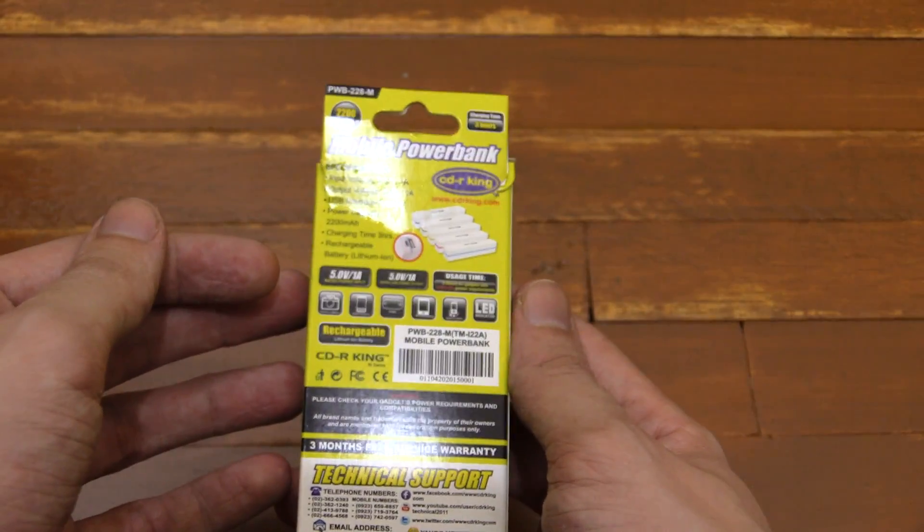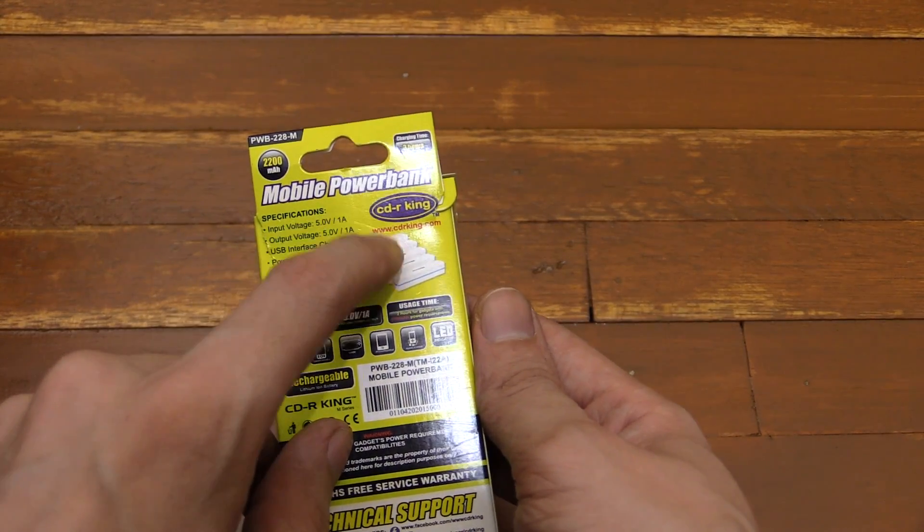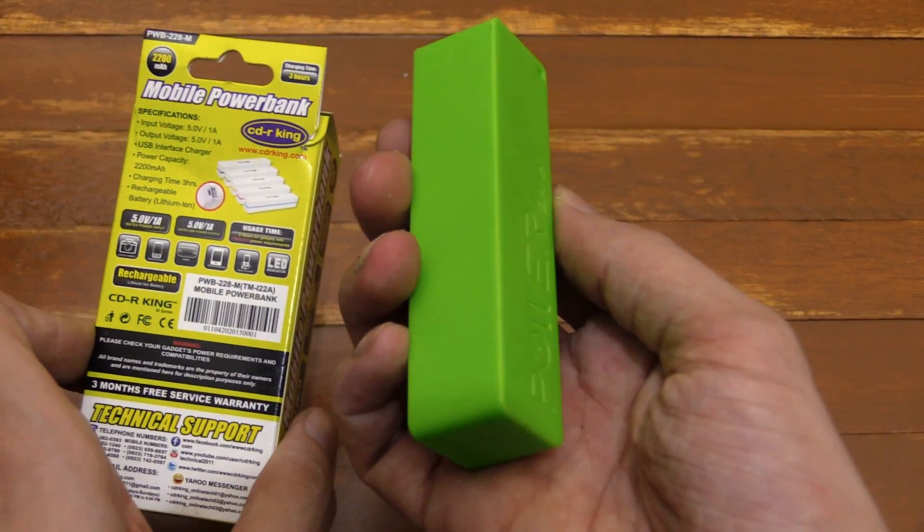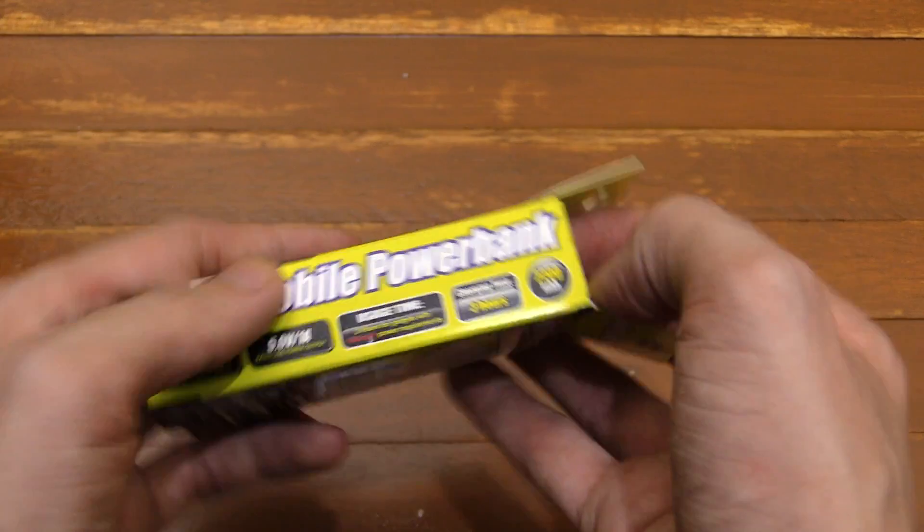So what's the difference between these? This one also says input voltage 5 volts 1 amp, output 5 volts 1 amp, which is the same as the one I reviewed before, and the capacity is apparently the same. So let's have a look inside.